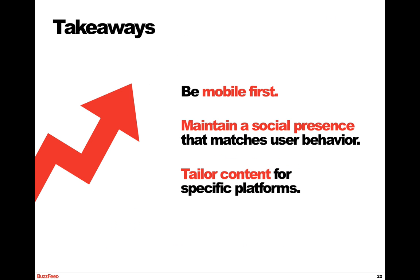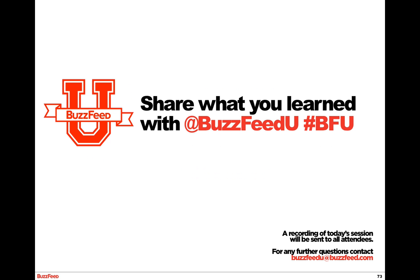Now that we've seen the environment and the various social channels, what are the main takeaways? One: be mobile first — I can't stress that enough. Second: maintain a social presence that matches user behavior, whether that means posting on evenings and weekends or during business hours. And finally: tailor content for specific platforms, be it news-based, professional-based, or identity-driven. Thanks very much, everybody, for listening. Be sure to share what you learned here at BuzzFeed U.